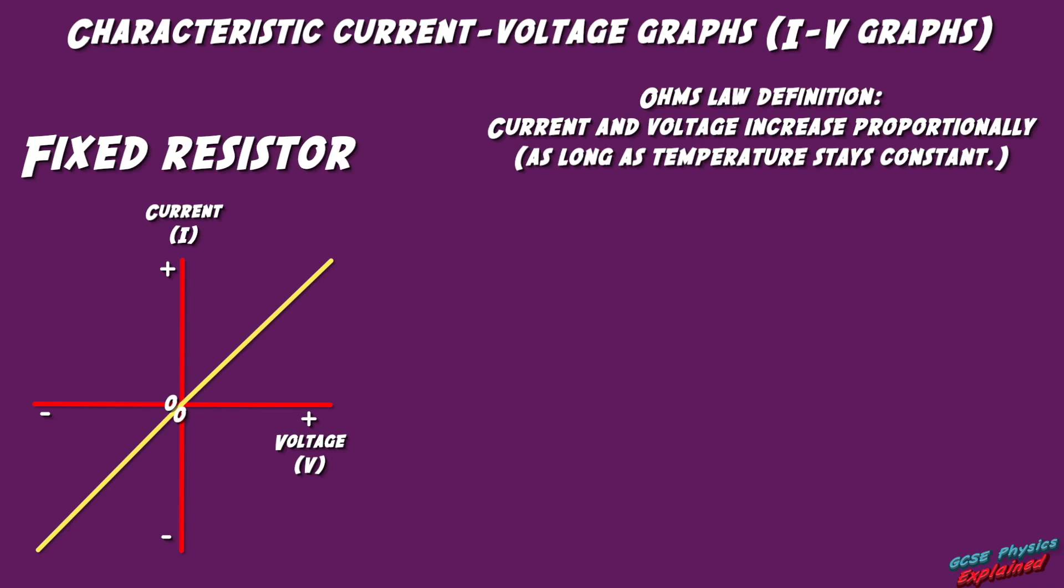Ohm's law states that the current through an ohmic resistor at a constant temperature is directly proportional to the potential difference or voltage across it. This means that the resistance remains constant as the current changes.